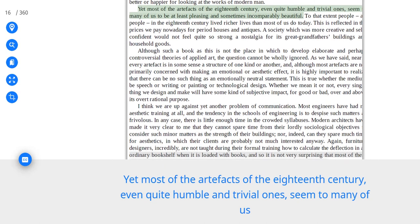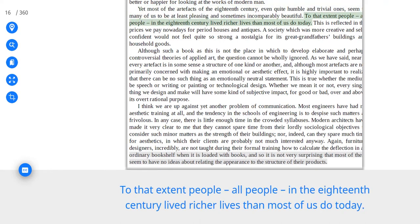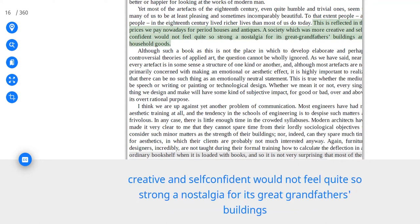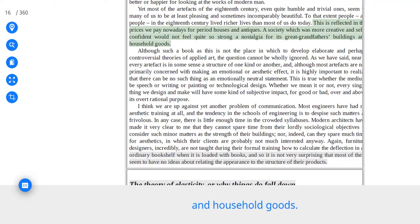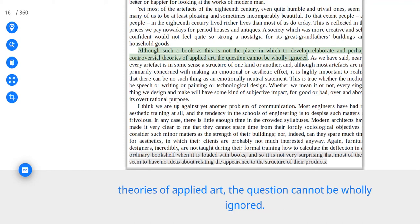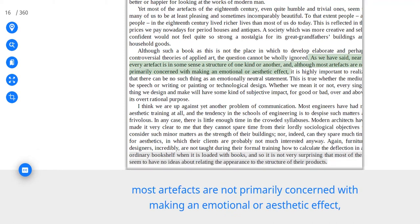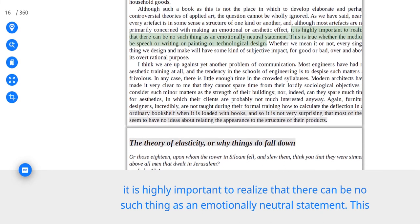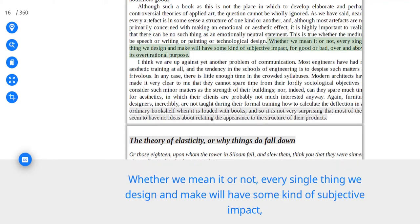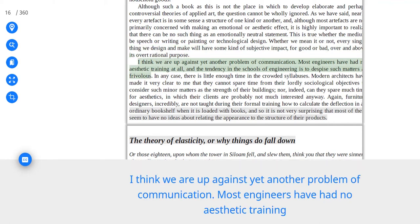Most of the artifacts of the 18th century, even quite humble and trivial ones, seem to many of us to be at least pleasing and sometimes incomparably beautiful. To that extent people, all people, in the 18th century lived richer lives than most of us do today. This is reflected in the prices we pay nowadays for period houses and antiques. A society which was more creative and self-confident would not feel quite so strong a nostalgia for its great-grandfather's buildings and household goods. Although such a book as this is not the place in which to develop elaborate and perhaps controversial theories of applied art, the question cannot be wholly ignored. As we have said, nearly every artifact is in some sense a structure of one kind or another, and, although most artifacts are not primarily concerned with making an emotional or aesthetic effect, it is highly important to realize that there can be no such thing as an emotionally neutral statement. This is true whether the medium be speech or writing or painting or technological design. Whether we mean it or not, every single thing we design and make will have some kind of subjective impact, for good or bad, over and above its overt rational purpose.